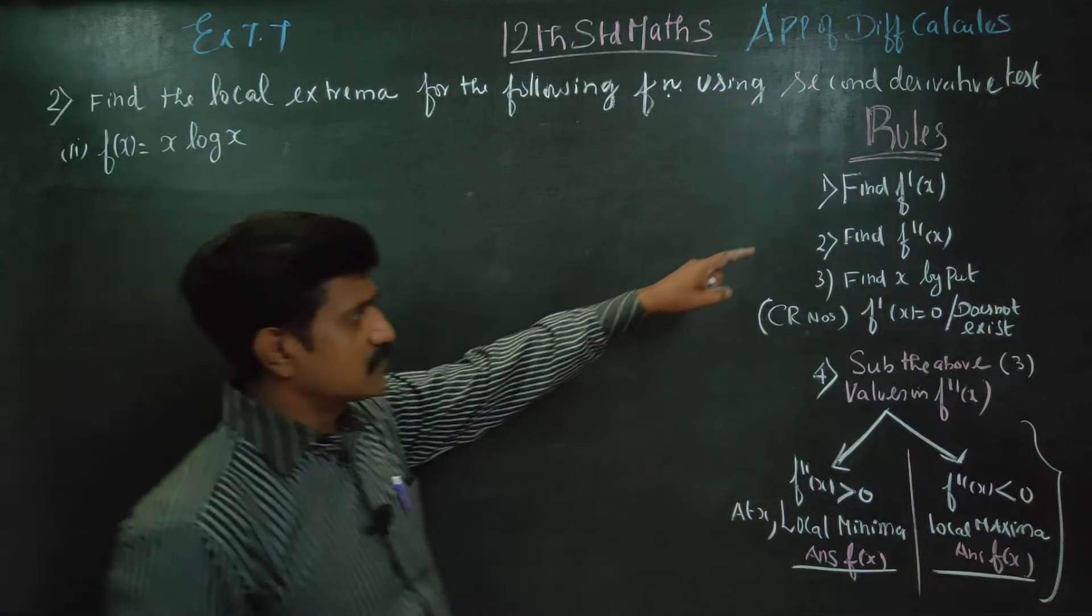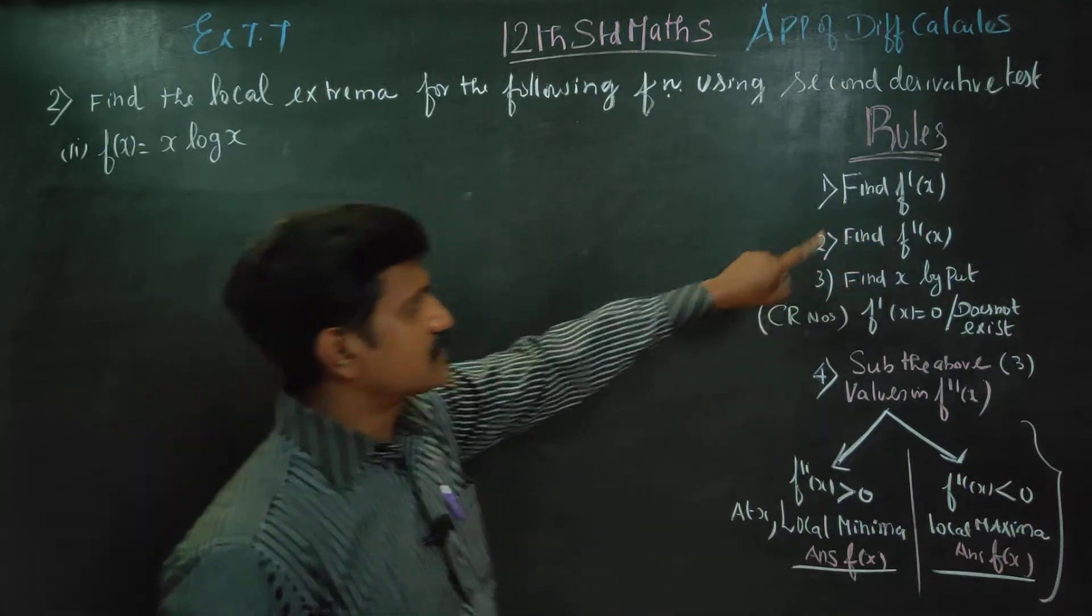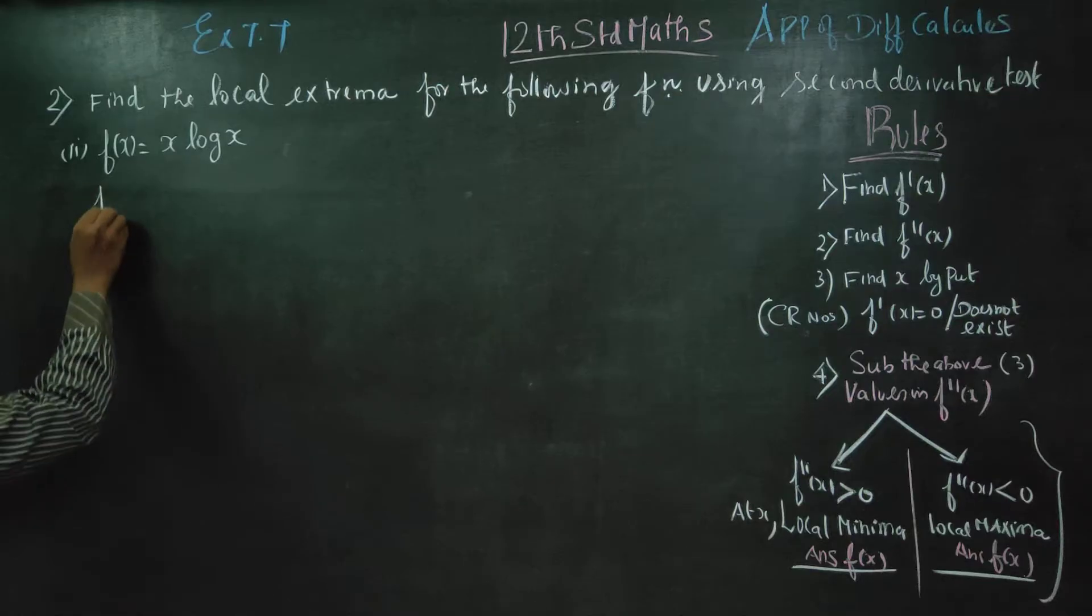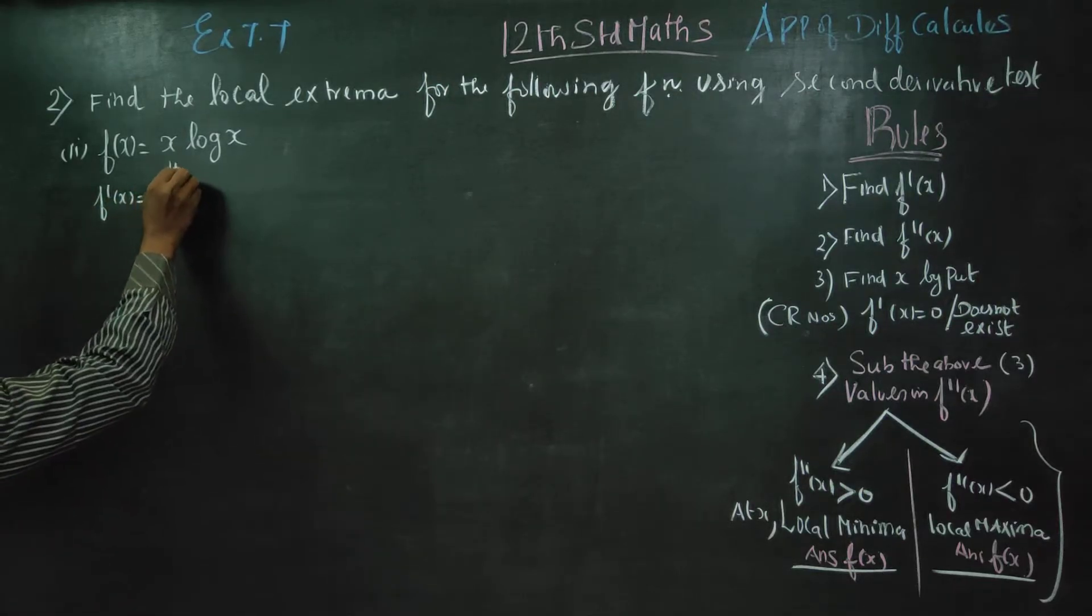In second derivative test, what is the rule? First you have to find f'(x). Differentiate using the uv formula.